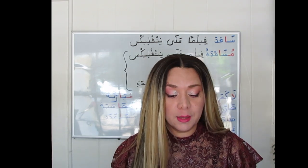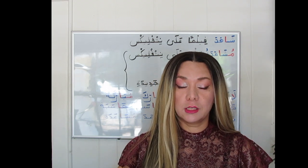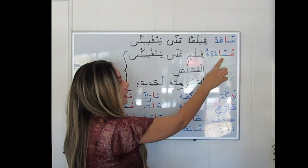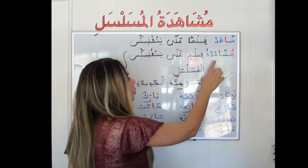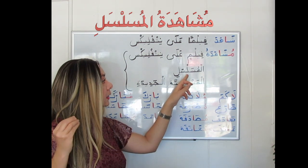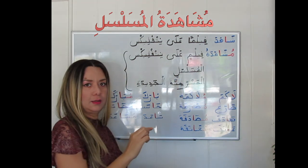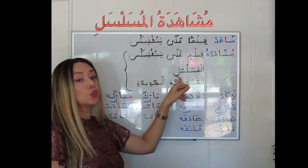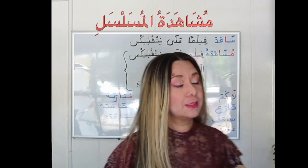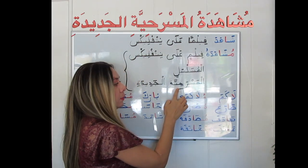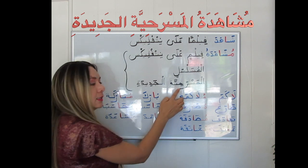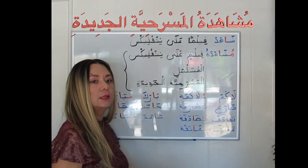This possessive construction is required with verbal nouns when the verb is transitive, needing a direct object to complete the idea — like مُشَاهَدَة المسلسلِ — watching the TV series. المسلسلِ is a definite noun, that's why we use one كسرة.